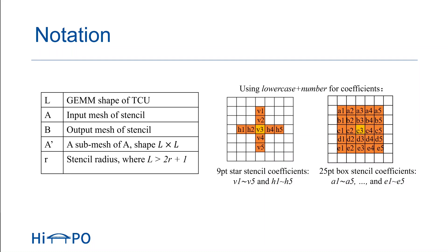We also compare TC-Stencil with three state-of-the-art stencil optimization frameworks on GPU, including Artemis, AN5D, and Brick. Specifically, none of these frameworks support stencil computation in FP16 precision. To ensure a fair comparison, we convert the optimized stencil code from these frameworks into FP16 precision. As a result, TC-Stencil achieves significant speedup over these three stencil frameworks. The average speedup ranges from 1.23× to 3.77×, and the highest speedup ranges from 3.5× to 16.63×.